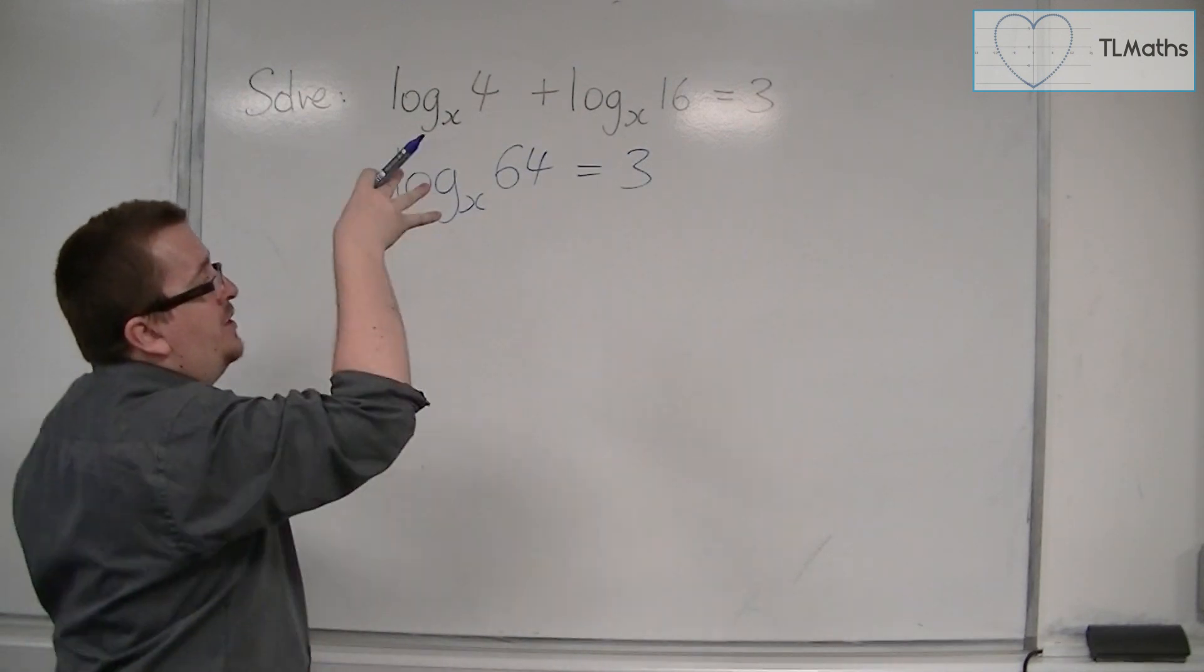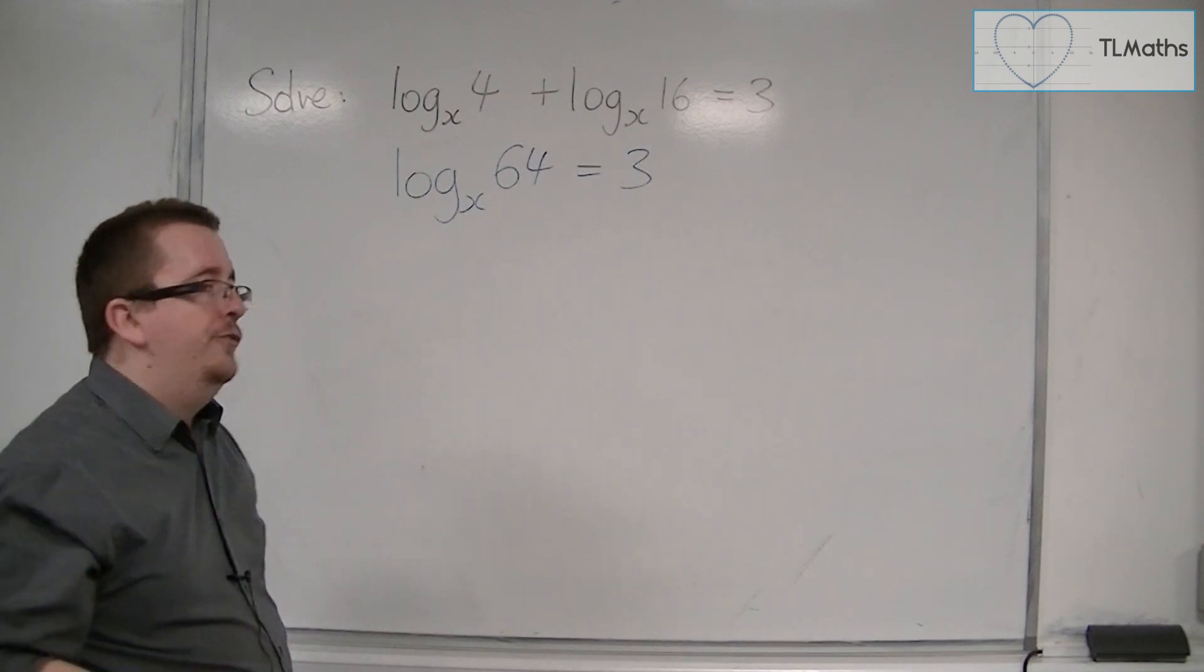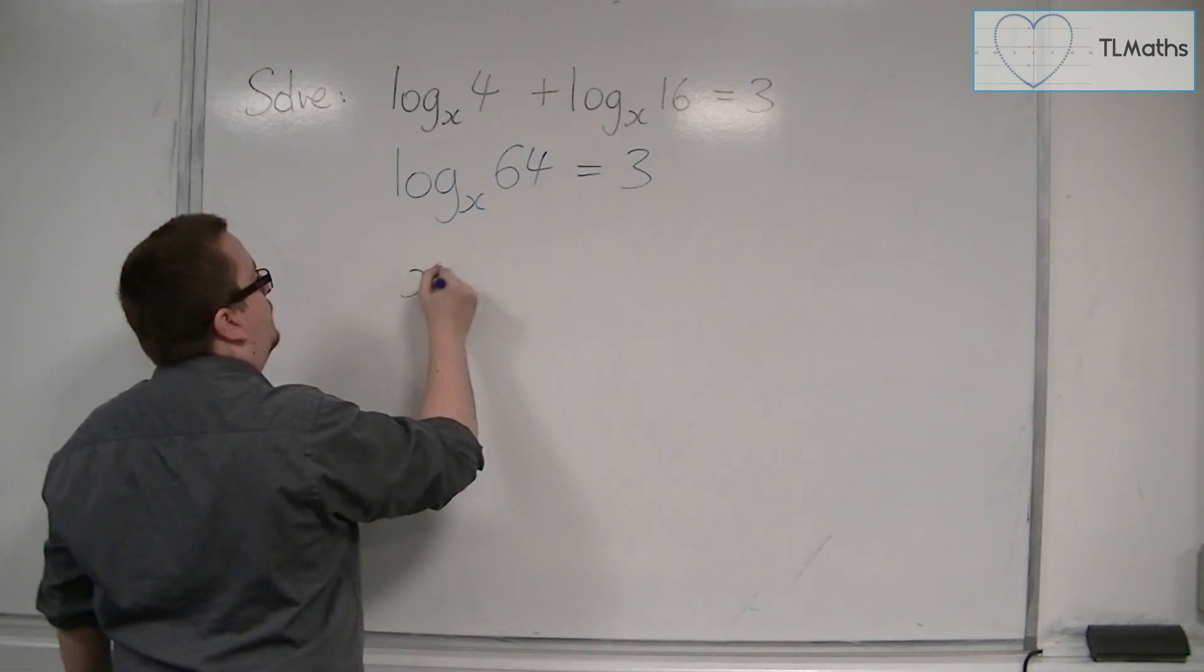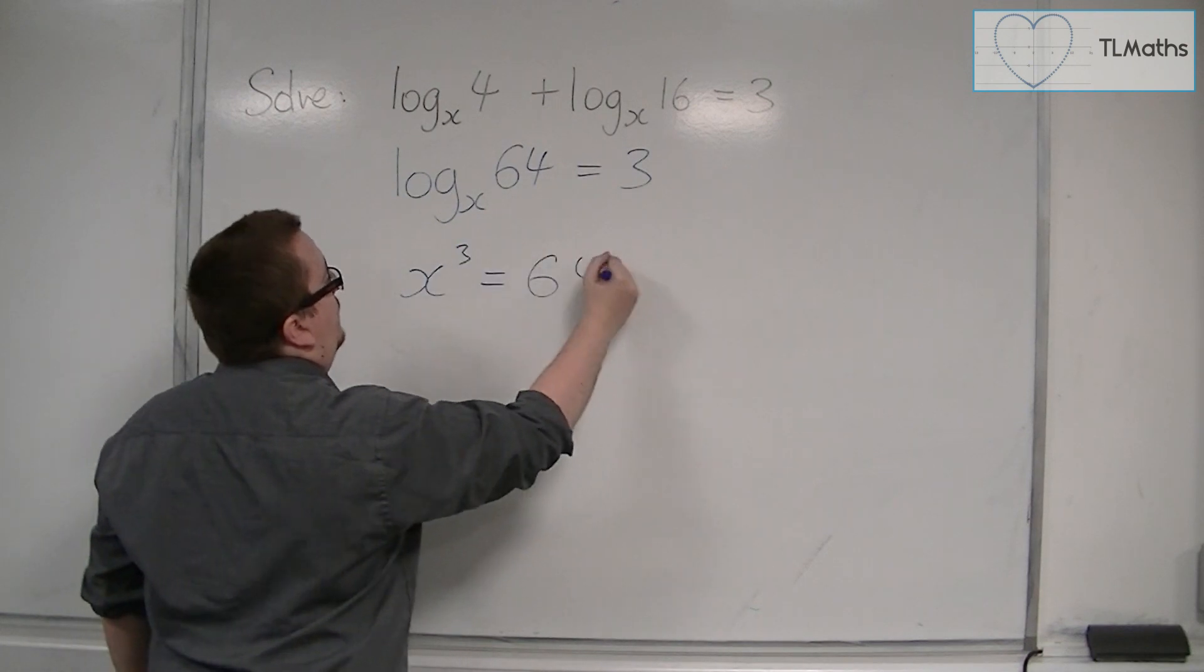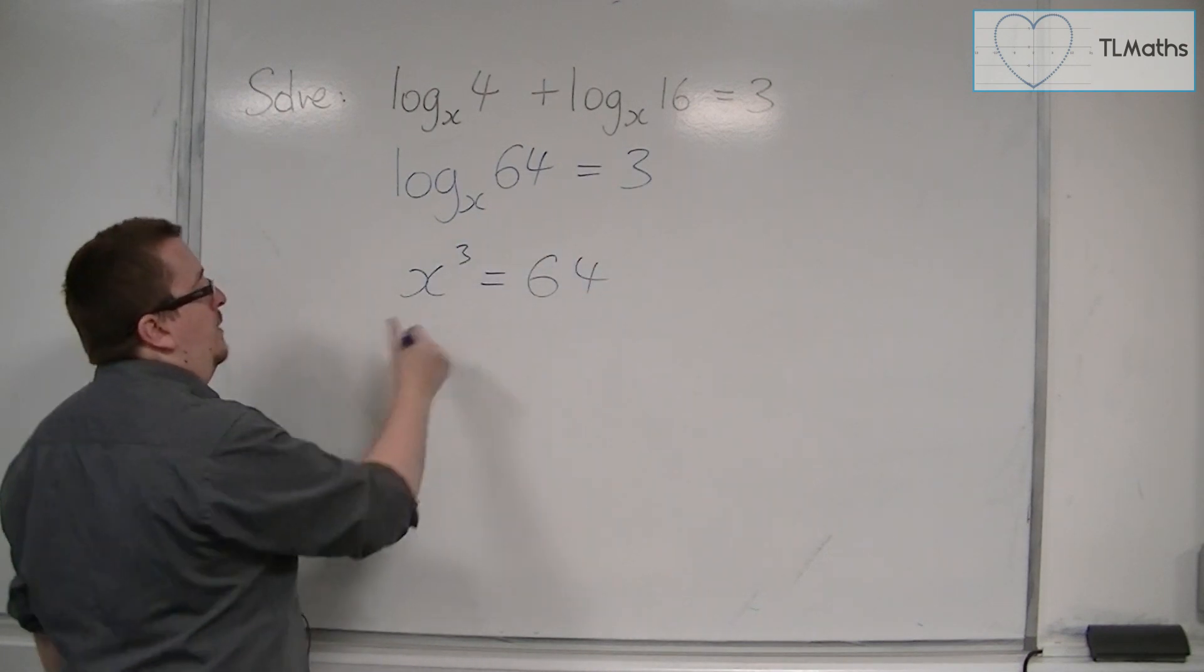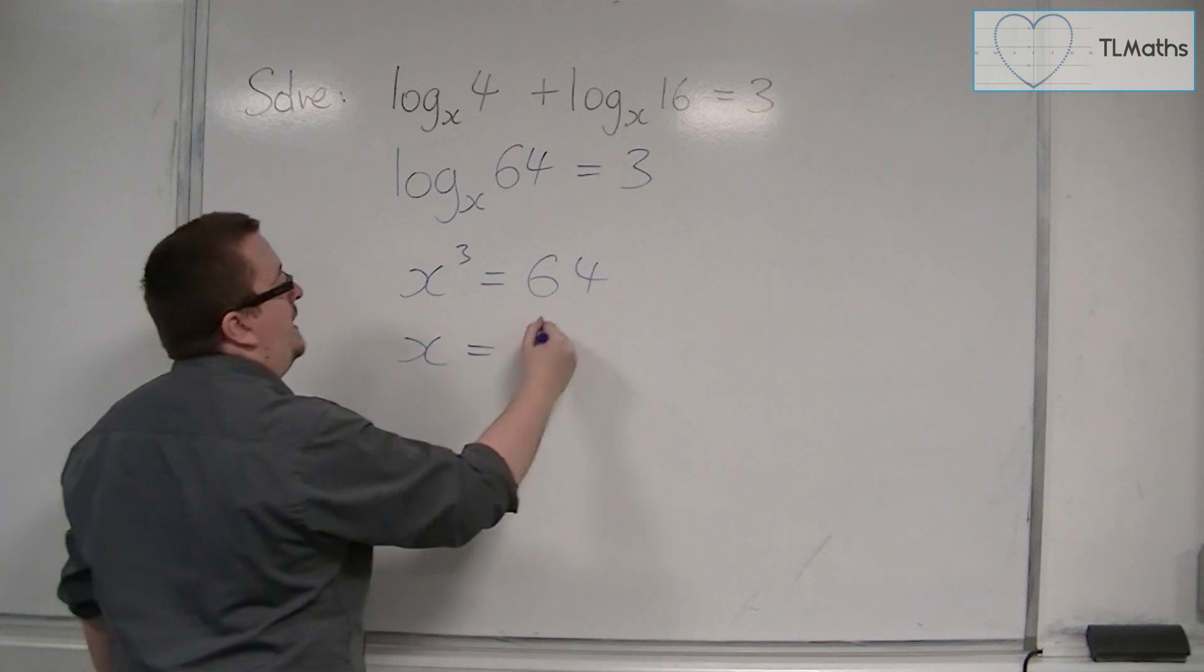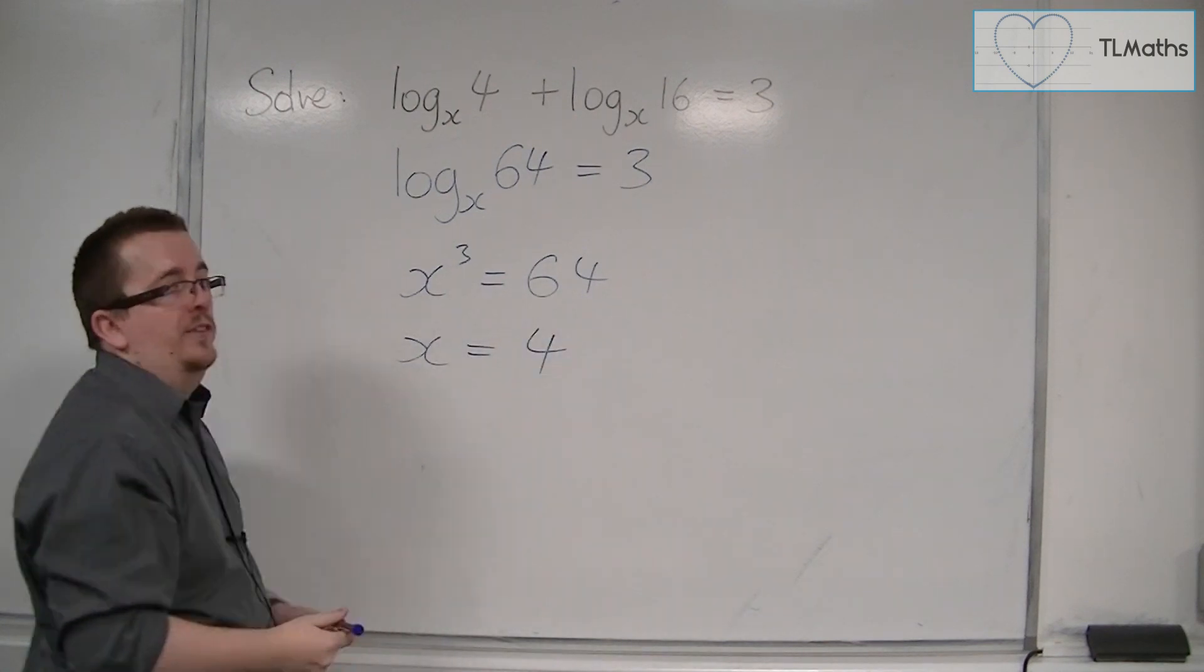Then I can convert that into exponential form. So x cubed is equal to 64, and so x must be equal to 4, the cube root of 64.